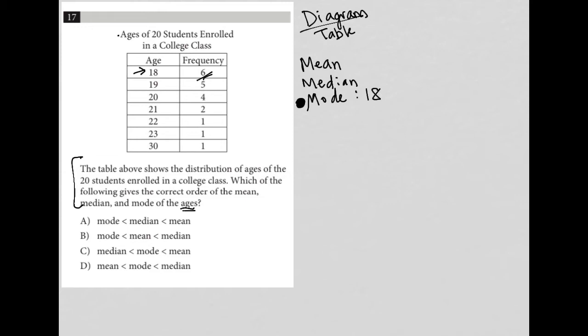The next easiest to find is the median. I have a shortcut on how to do this using the table, but I'll just show the longer way for the purpose of this video. We're going to list out all of the ages and their frequencies. I'm going to have six 18s drawn out because there's six of those, five 19 year olds, four 20 year olds, two 21s, and then a 22, a 23, and a 30.